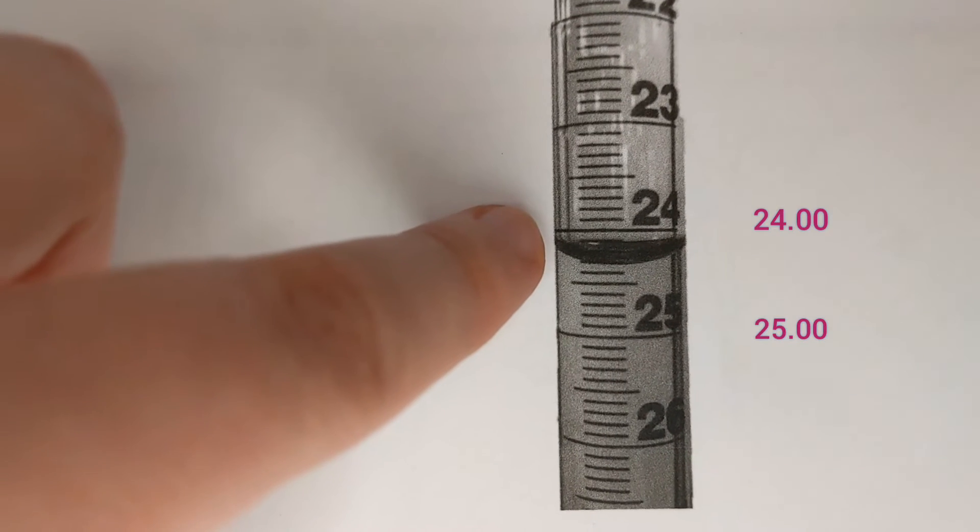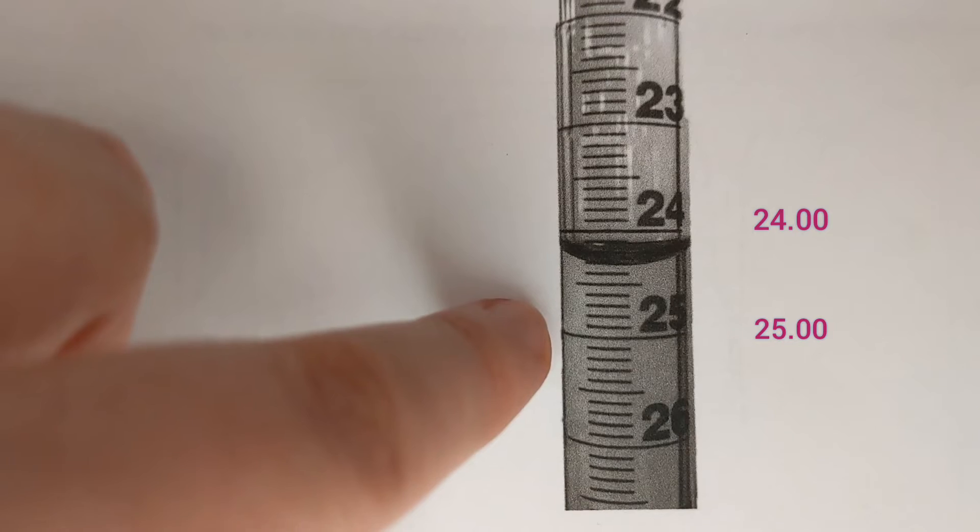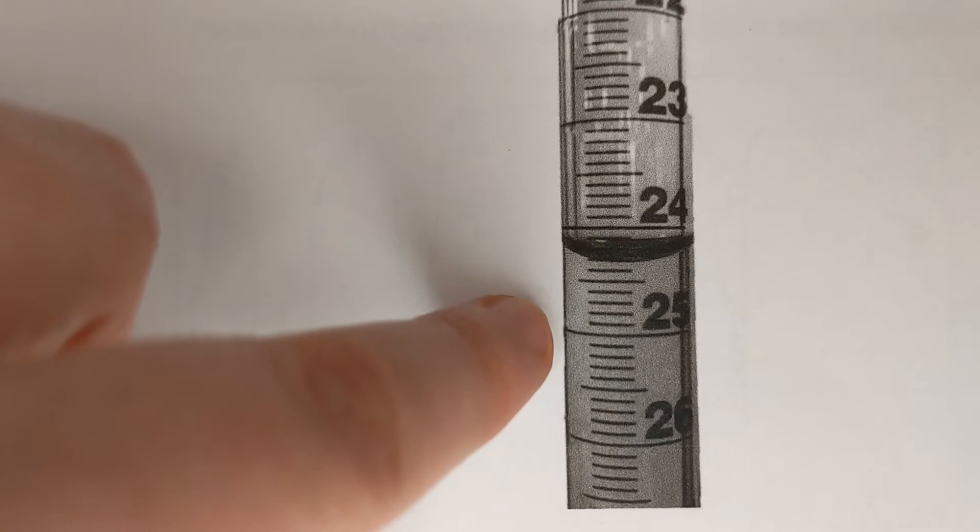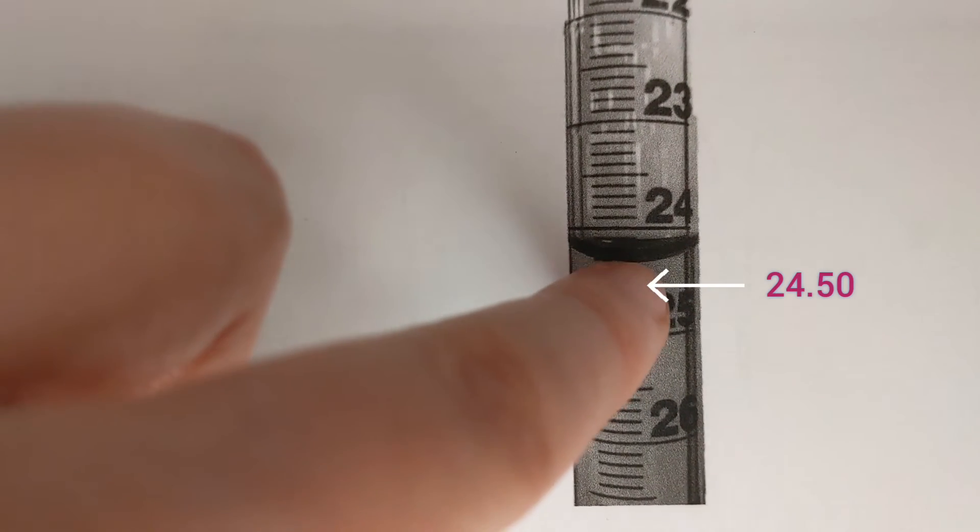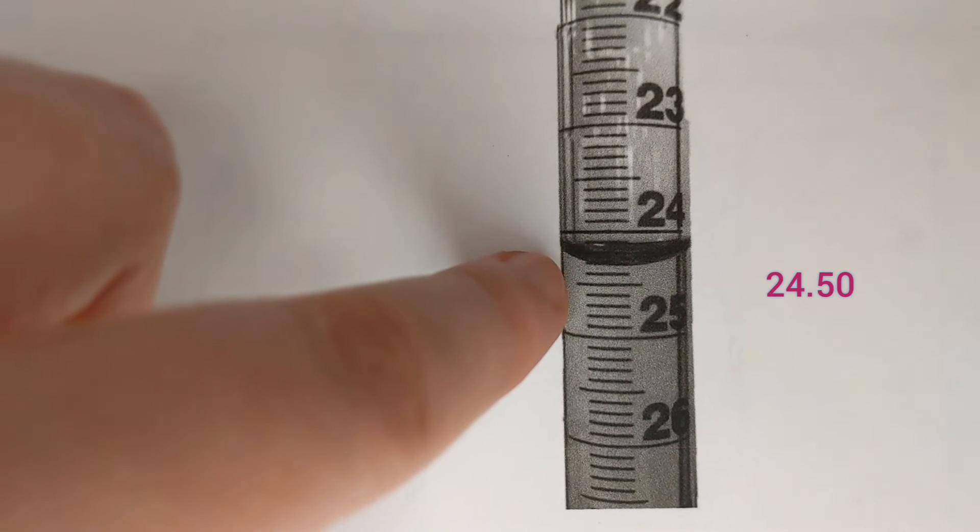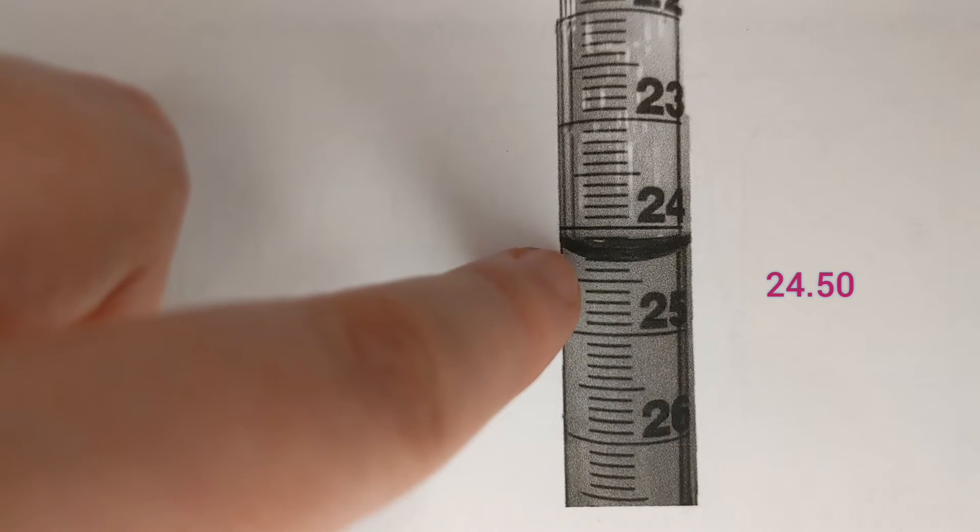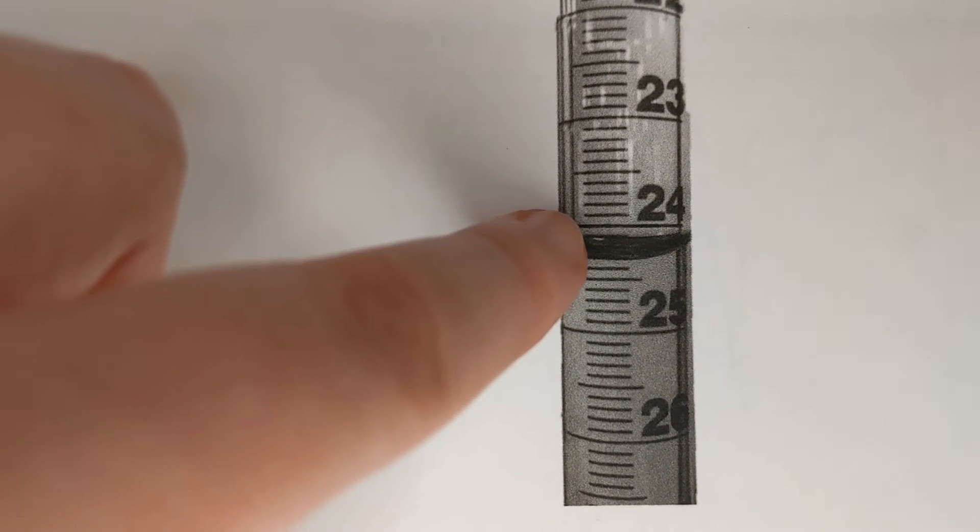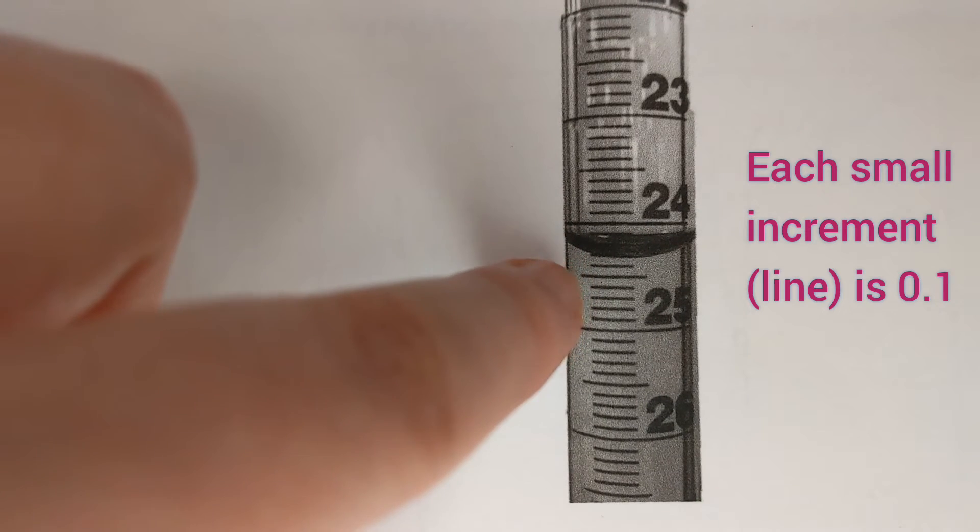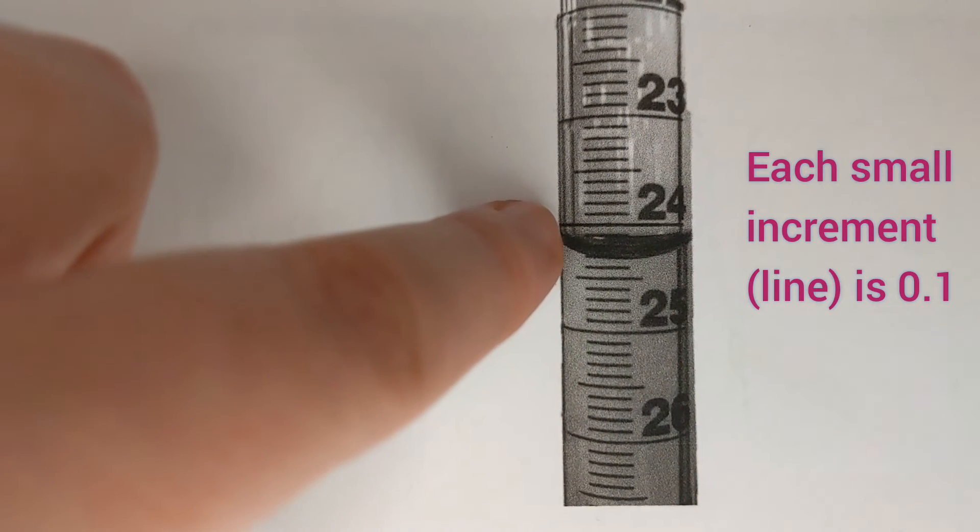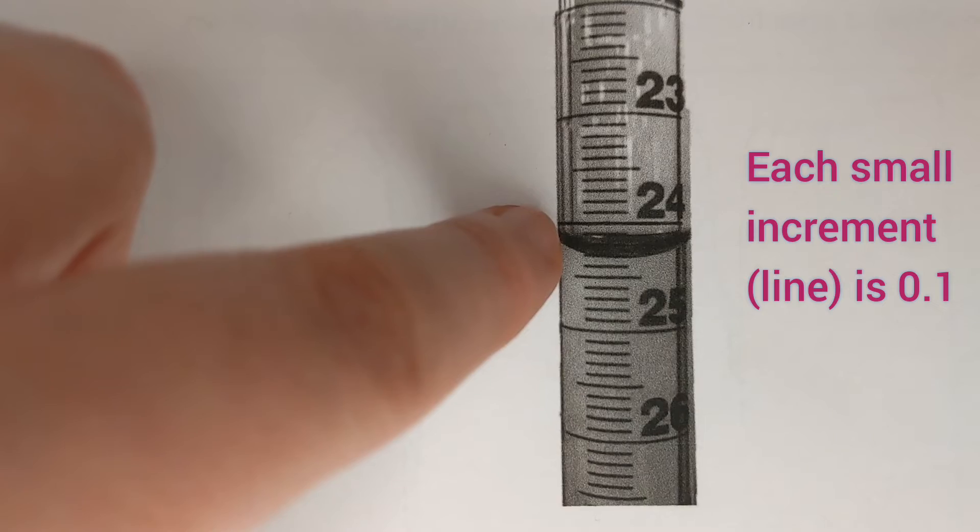So this long line here is the 24mm mark, this long line here is the 25mm mark and this longer one in the middle is 24.5. So that means these little graduations in between must be 0.1 mils each.